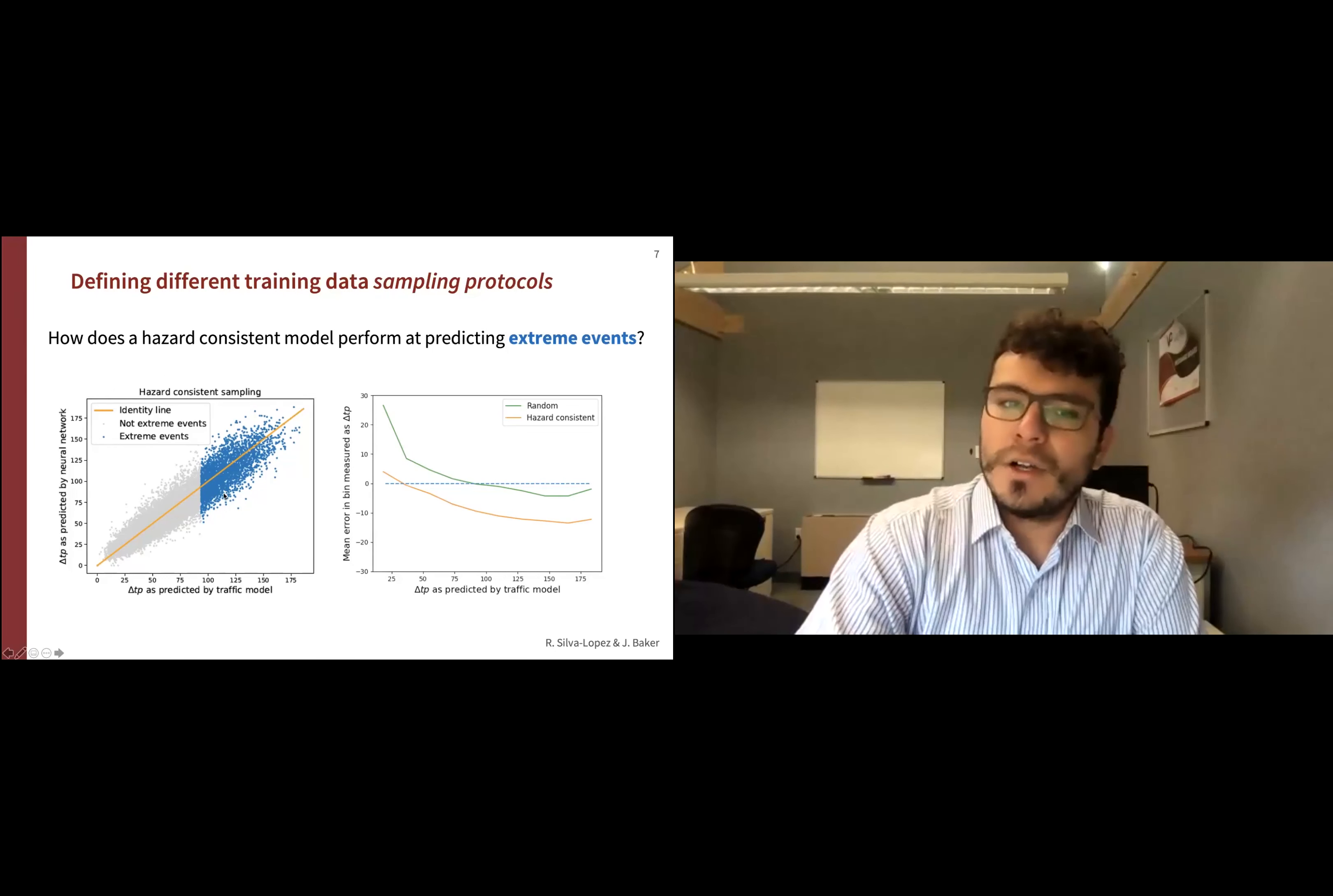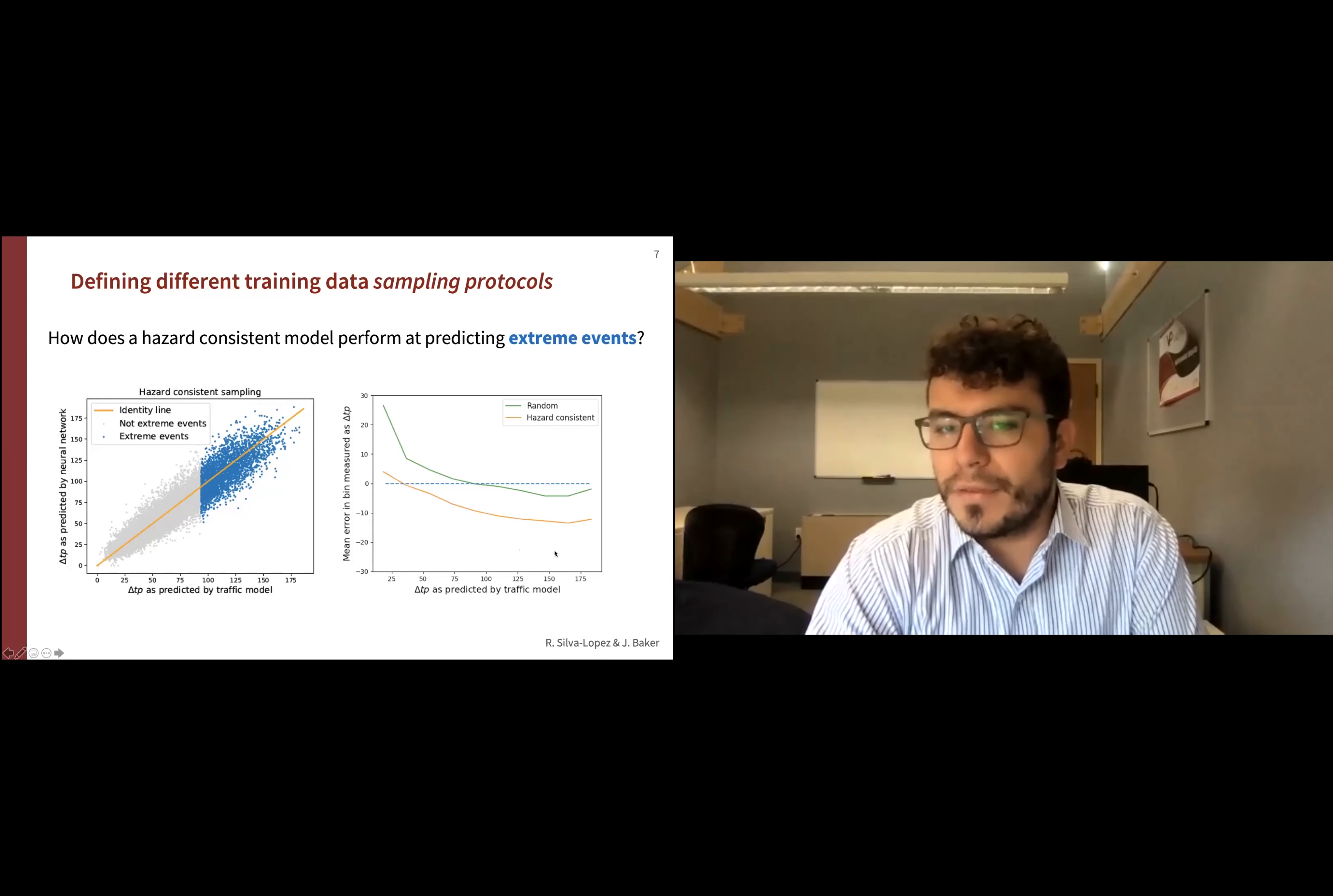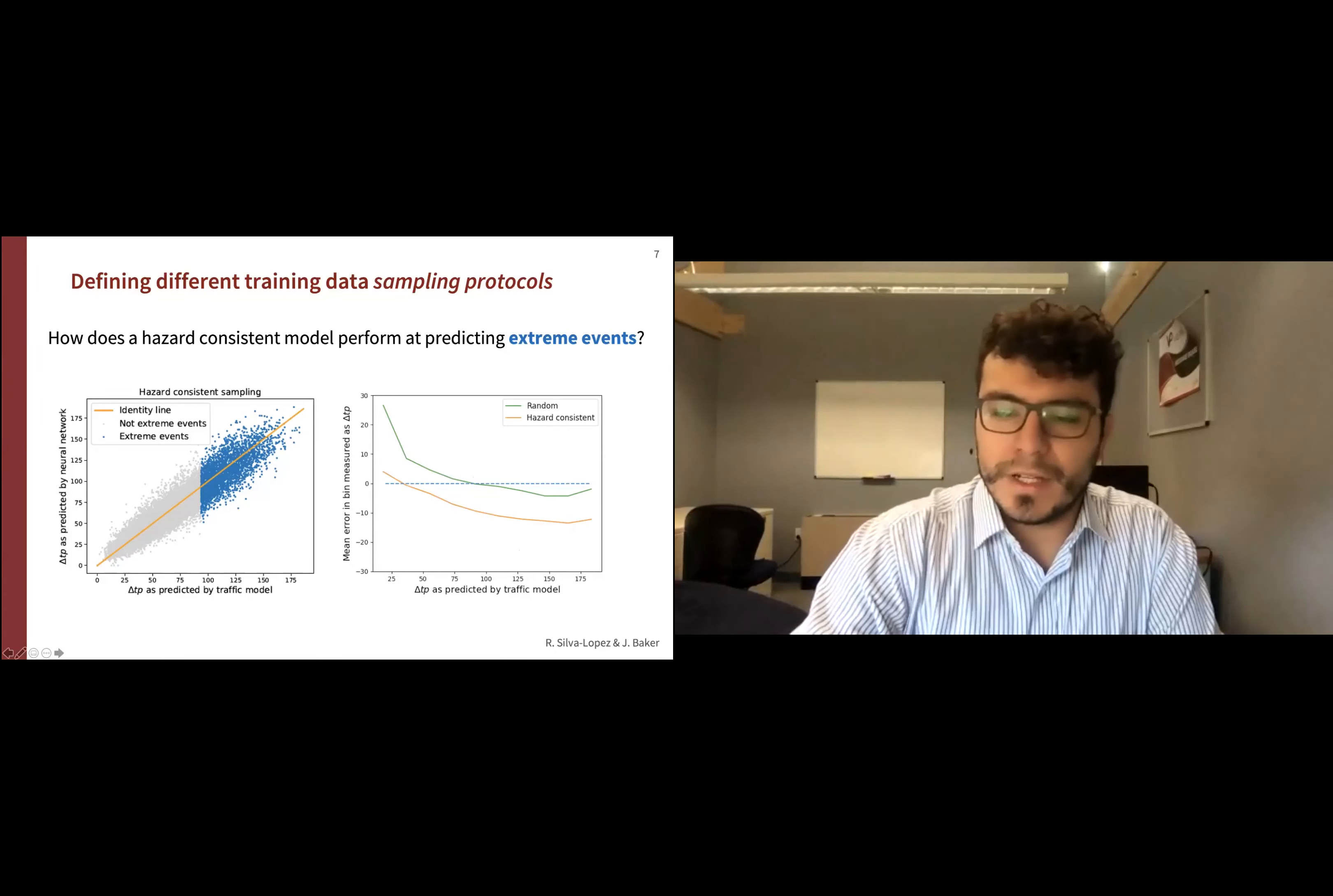In the scatterplot, it may not be evident that the hazard model actually doesn't perform that well for extreme events. We plotted the error for different windows of traffic performance to see how the error evolves as a function of how disruptive the event is. As you see, the orange line shown here, which is hazard-consistent, induces a bias when we increase the disruption of the event. As a benchmark, we also used random realizations of data to train the neural network, and the bias with that is lessened. This raises the problem that you need to modify your hazard-consistent sampling by including more extreme events so you get better predictive performance.